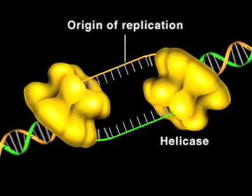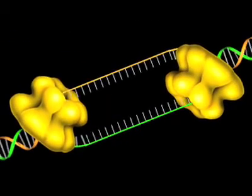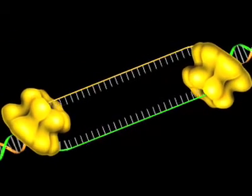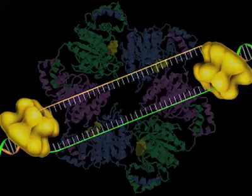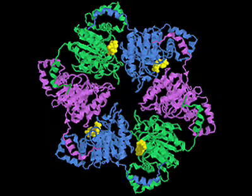Helicases separate nucleic acid duplexes into their component strands using energy from ATP hydrolysis. The crystal structure of this DNA helicase from bacteriophage T7 reveals a hexagonal arrangement of six identical subunits.